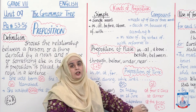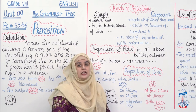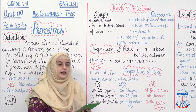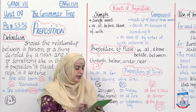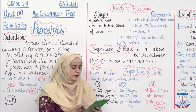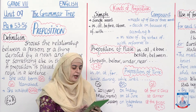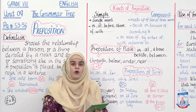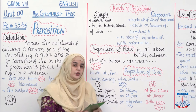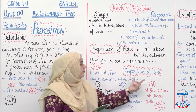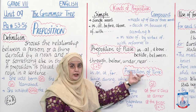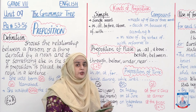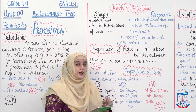Is ki bhi reinforcement karte hain Exercise C ke zariye, so that the concept is clearer to you. Exercise C is basically a dialogue. Khashif is arranging a meeting with Arij. Fill in the blanks in the following sentences with 'in,' 'on,' or 'at' — the three placements of prepositions of time that we have noted.